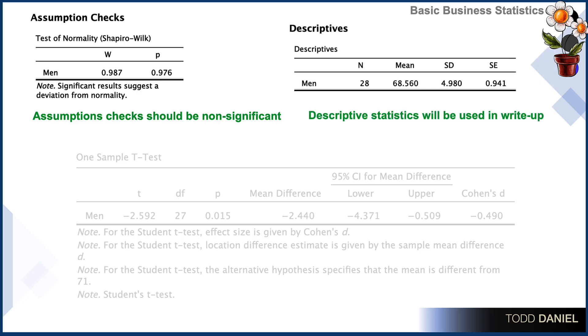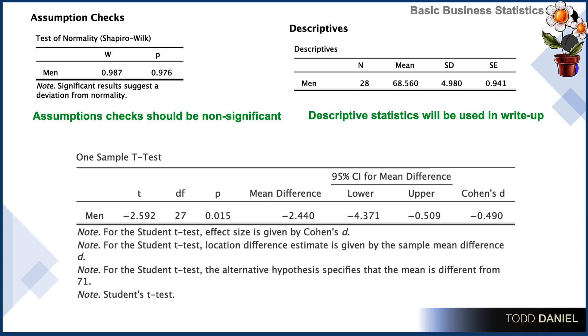We can find our descriptive statistics in the box labeled descriptives. And this will be the case regardless of the type of software that you're using. We'll use these descriptive statistics in the write-up. And here is how we would interpret the actual test.